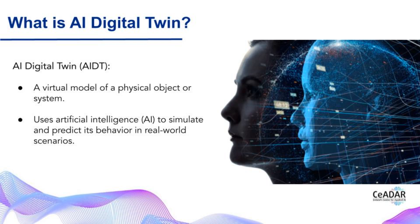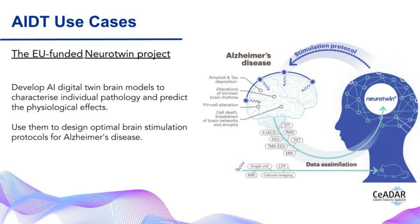Now let's take the concept one step further with an AI digital twin. It's a virtual model of a physical object or system that uses AI to simulate and predict its behavior in real-world scenarios. Machine learning algorithms are incorporated to analyze and learn from data collected by the AI digital twin, allowing it to make predictions about the future behavior of the physical object or system.